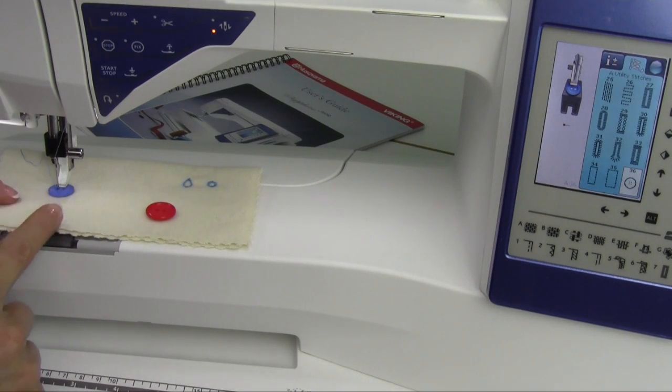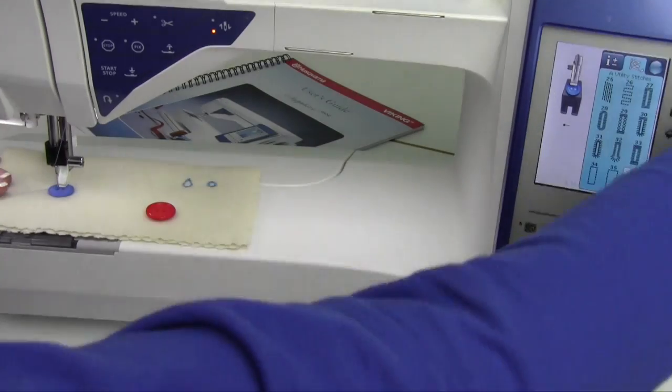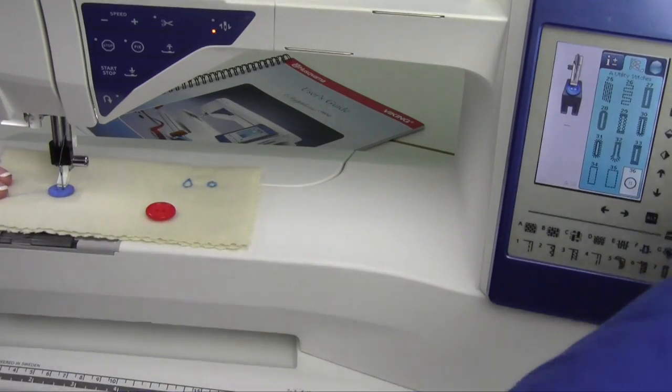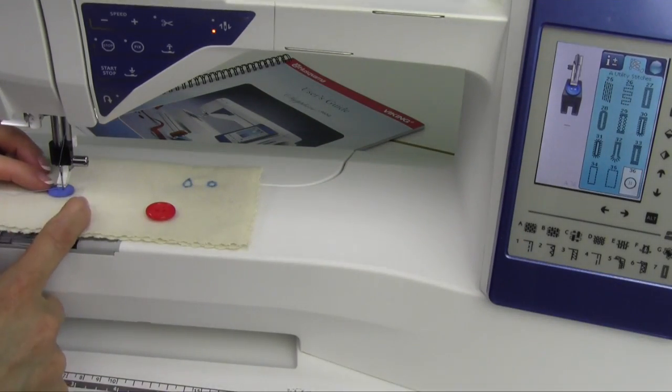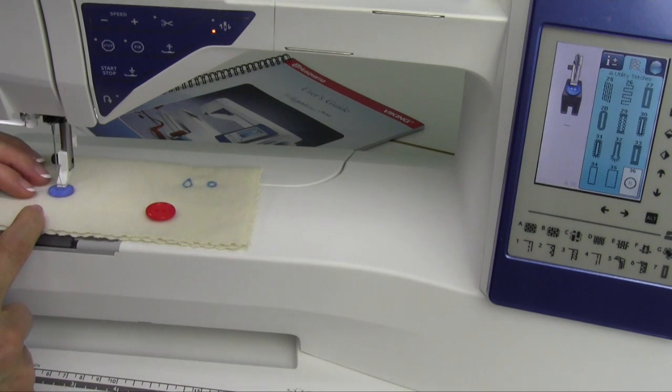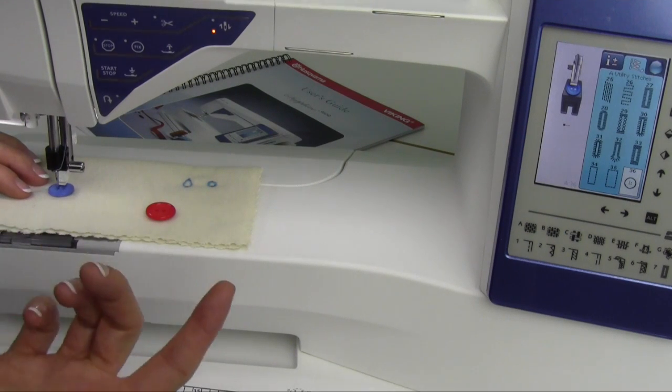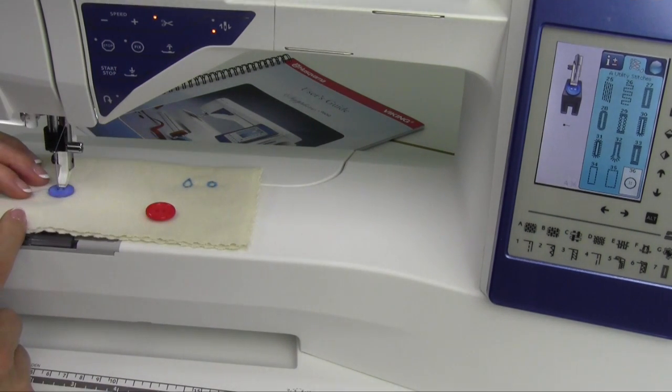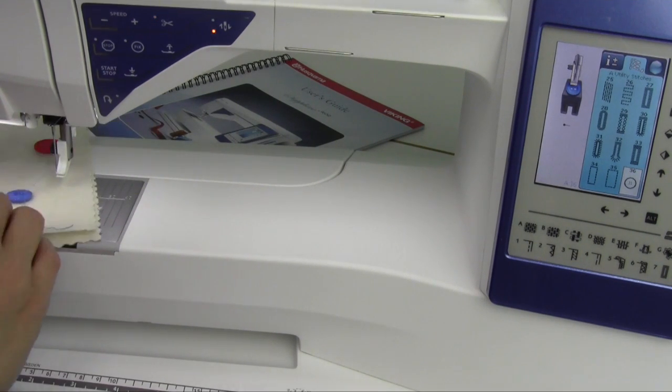Now once you're lined up here, what I would want you to do is hand turn so that the needle, you make sure that it's going to swing into the right side of the button here. Then just go ahead and stitch. It will lock and it's already done. Then you can use the selective thread cutter and it will cut the thread for you. It knows to pick a hole and not just cut in the middle there.